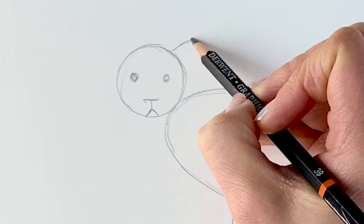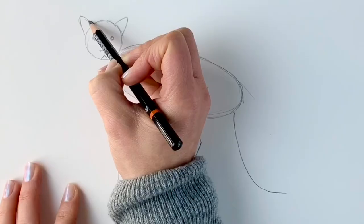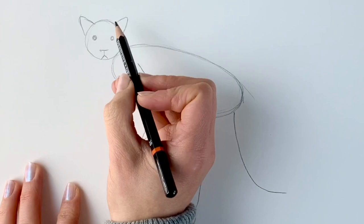And then two triangles for the ears. It's quite easy, isn't it? I bet you're surprised. And then another one like this. And then one line just coming from the bottom of this ear and it's joining up the oval shape there.